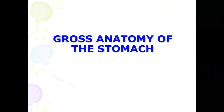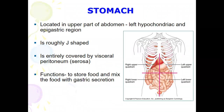I'm going to discuss the gross anatomy of the stomach first. The stomach is located at the upper part of the abdomen, specifically at the left hypochondriac and also the epigastric region. You can see here this is the area where you can find the stomach. The stomach is roughly J-shaped.